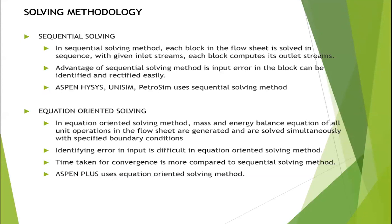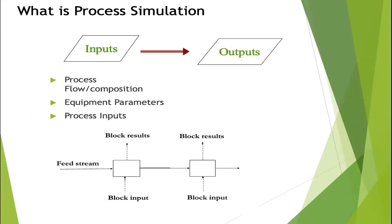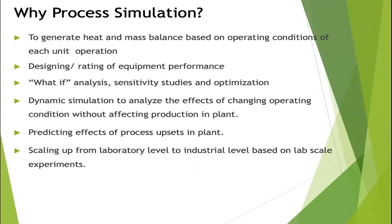In process simulation, you provide inputs — flow, composition, and equipment parameters for each unit operation — and the simulator solves the equations in the background and gives you the outputs, including stream properties. Once the entire flowsheet is completed, you can develop a heat and material balance.